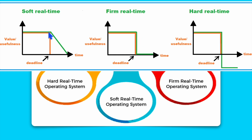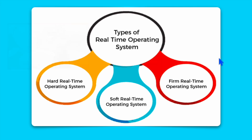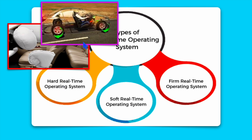In a soft real-time system there will not be any system failure if the deadline is missed. In a firm real-time operating system, if you miss the deadline it can be compensated later — it is not a system failure. The difference between soft and firm is that more relaxation of response time is given in soft real-time, and comparatively less relaxation in firm real-time. In a hard real-time system it is strictly followed — missing the deadline is a system failure.